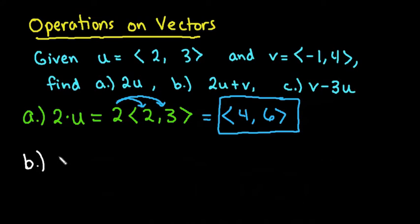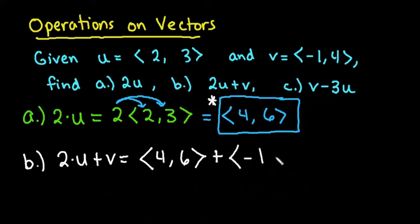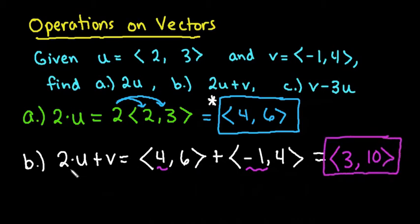All right, for the second one we're going to take 2 times u and we're going to add v to it. Since we already found 2 times u was 4, 6, I'm not going to do that work again. Adding in the vector v, I would take negative 1 comma 4. And then when I simplify this, all I have to do is add corresponding elements. So 4 plus negative 1 gives me 3, 6 plus 4 gives me 10. And so this would be the result of doing 2 times vector u plus vector v.